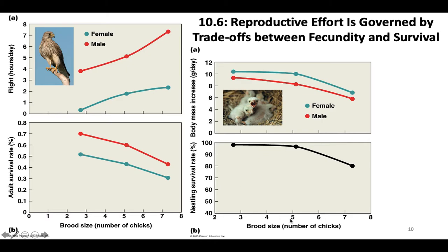Adult survival rate of both males and females decreases with brood size because they have to go out and find more food to feed hungry chicks. Looking at body mass increase for male and female chicks: there's a decrease in the amount of weight they can gain per day at higher brood sizes, probably because mom and dad can only collect so much food, so the more mouths to feed, the less everyone gets individually. Nestling survival rate also takes a big dip at higher brood numbers, probably because of those limited resources.